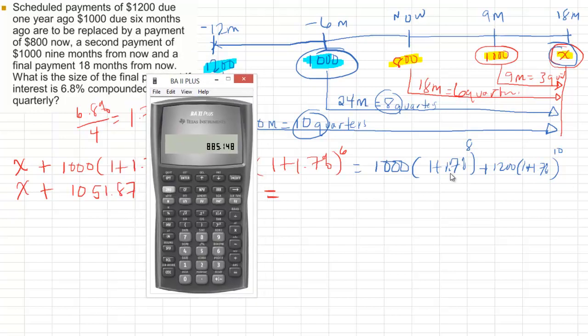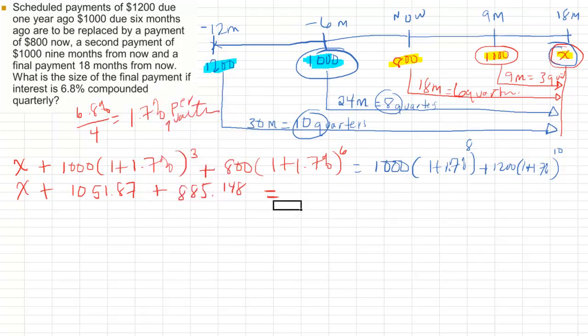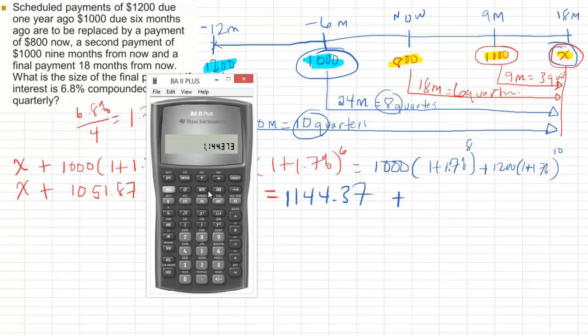Next, I'm going to compute the blue numbers or the original payments. I have 1,000 negative for my present value. 8 for the number of quarters. Everything else remains the same. Compute the future value. 1144373. I'll just write that in. 114437. And again, I don't write all the decimals but I keep them in my calculator.